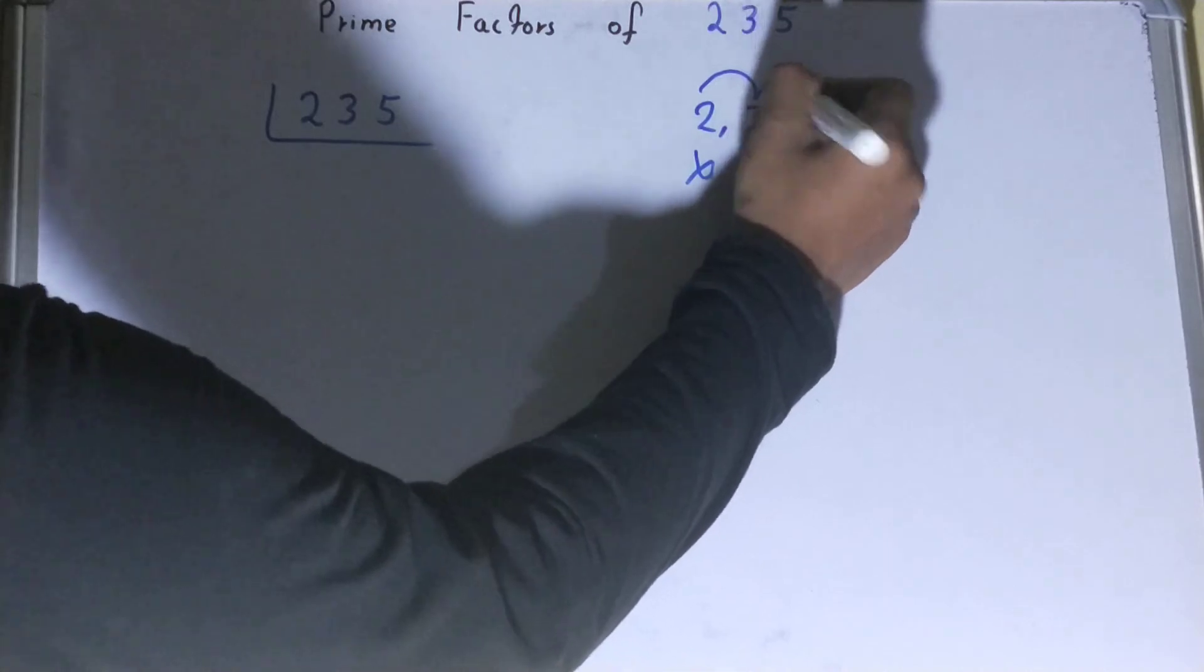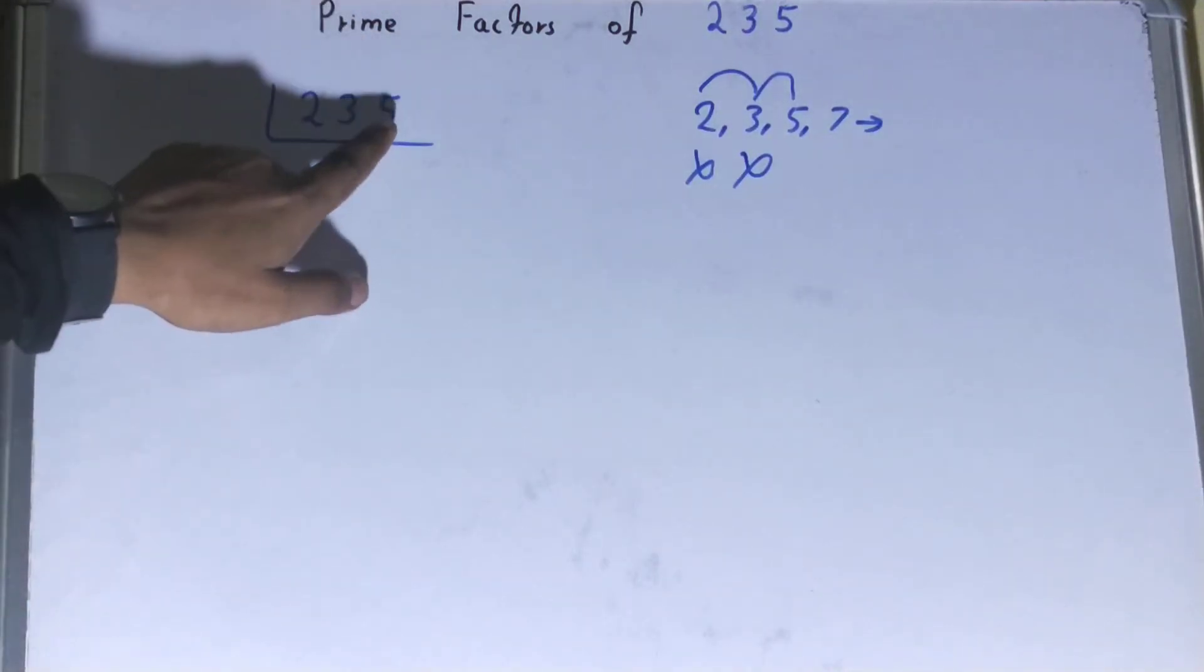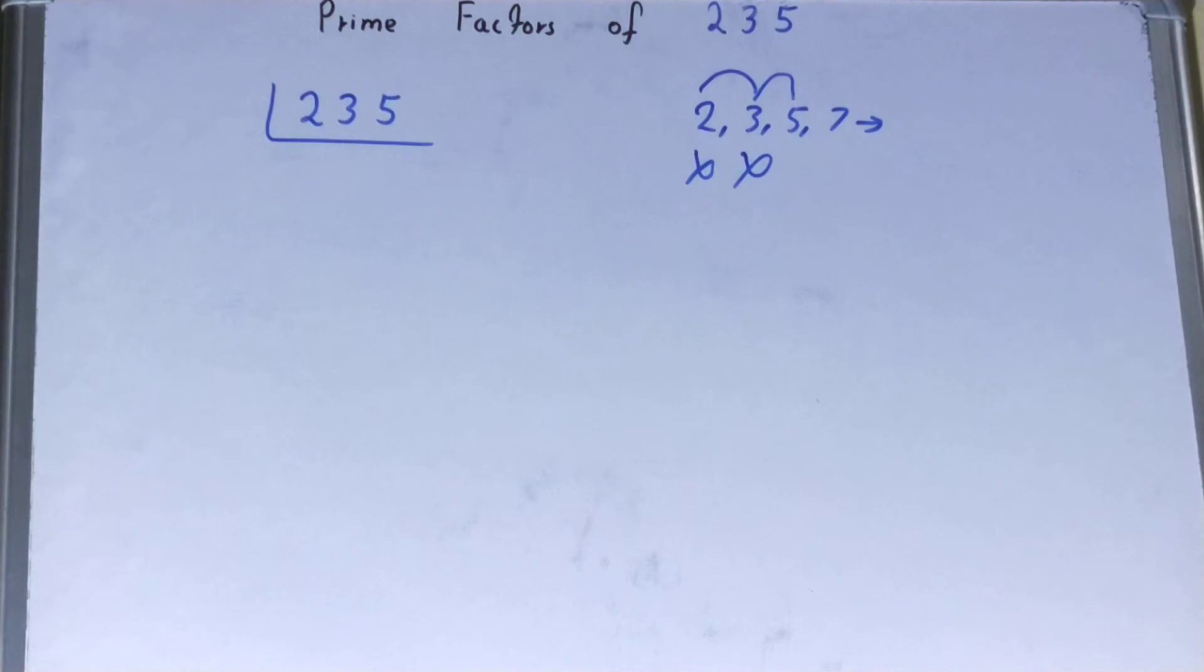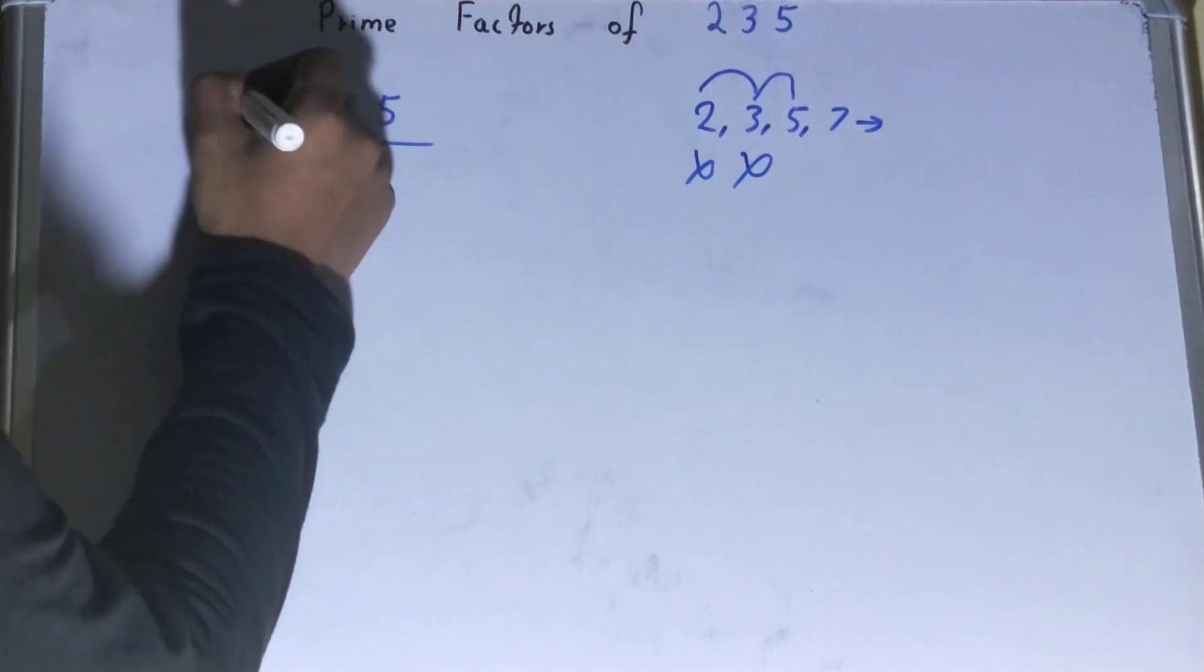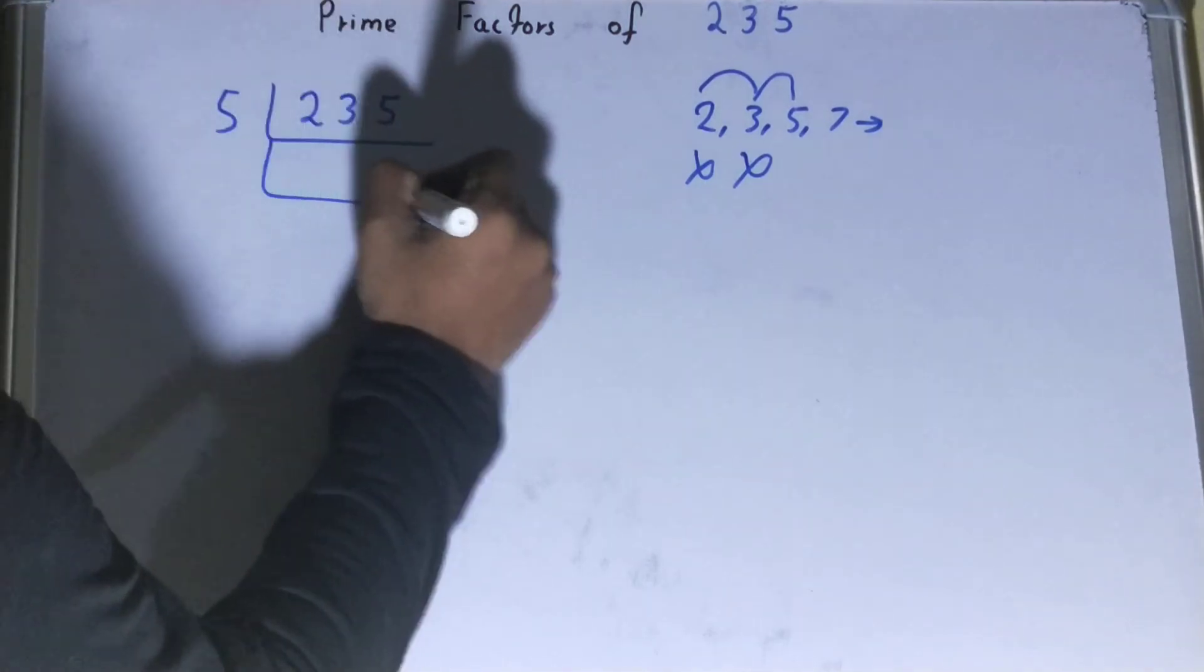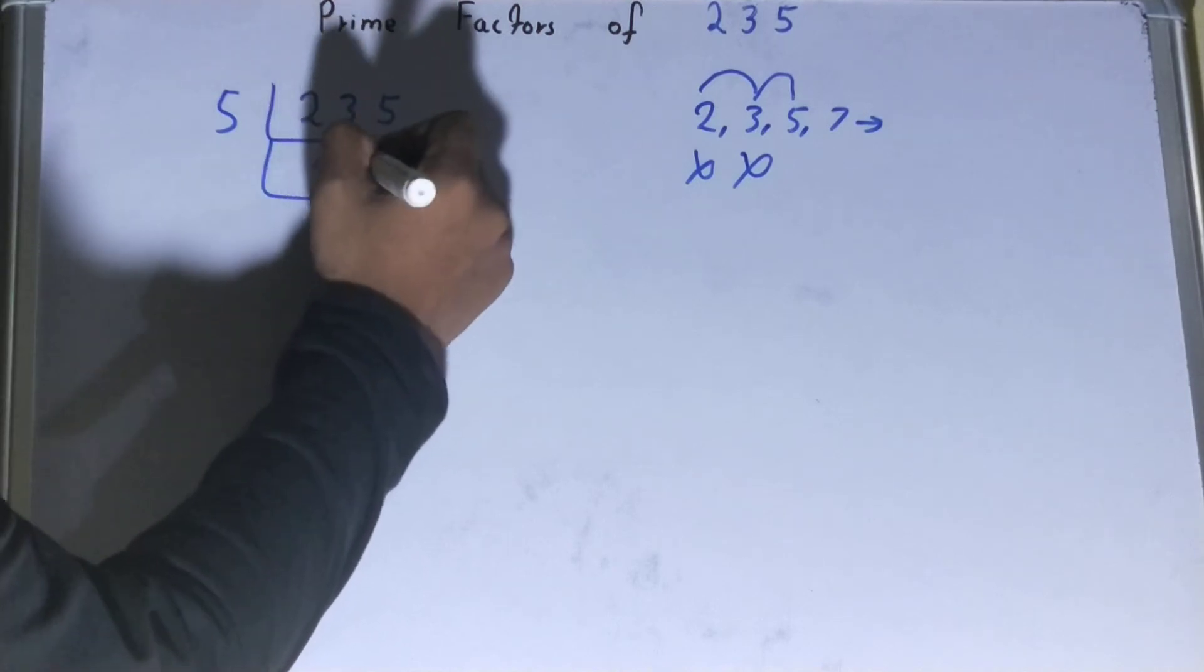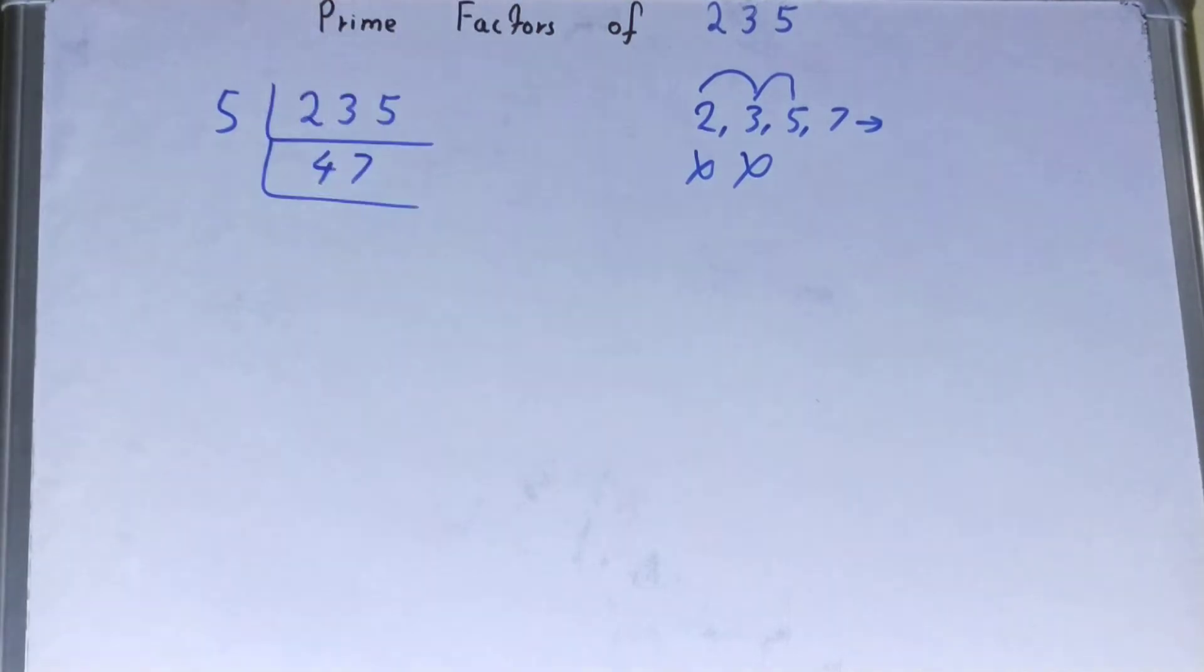So we'll go to the next lowest prime number that we have, that is 5. The last digit is 5, so obviously it is divisible by 5. So divide it: 5 into 235 is 47. All right, now this 47...